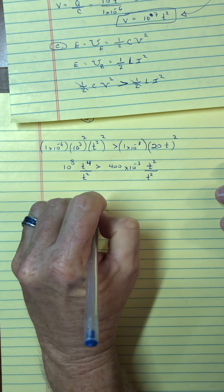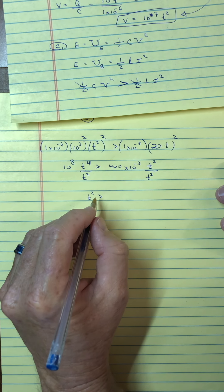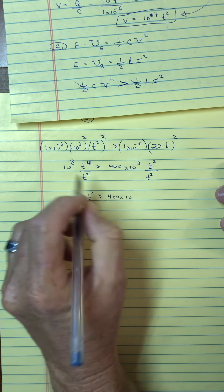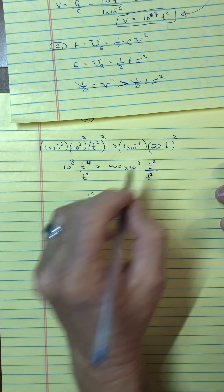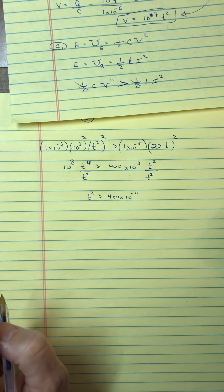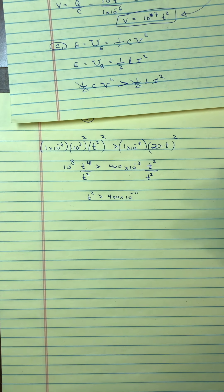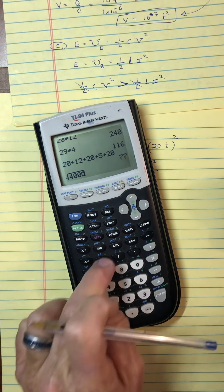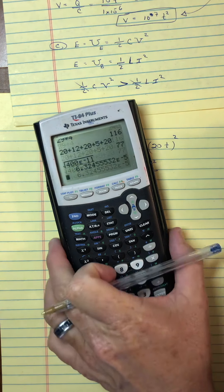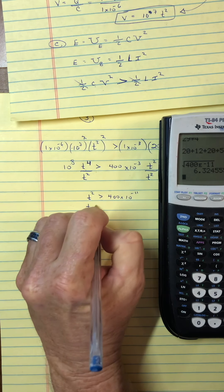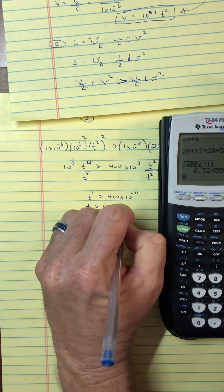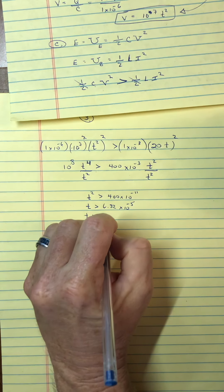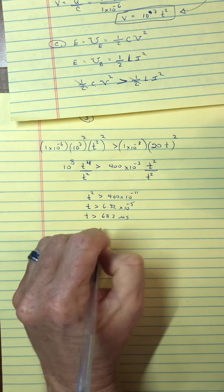I get T squared greater than, and maybe I'll just move this 10 to the minus 8 over here. So, this will be 400 times 10, minus 11. And, then, grab a calculator here. If I take the square root of 400 times 10 to the negative 11. Then, I get time at greater than 6.32 times 10 to the minus 5. Or, maybe in engineering units, I will make that 63.2 microseconds.